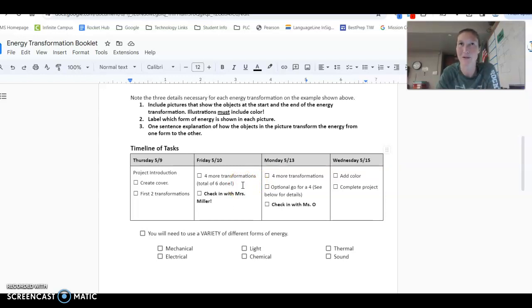Okay, that's six pages. Okay, so it'll be 12 pictures total. Now with each transformation, remember, you need three things. The picture for how it starts and the picture for how it ends. That's where your two pictures come from.